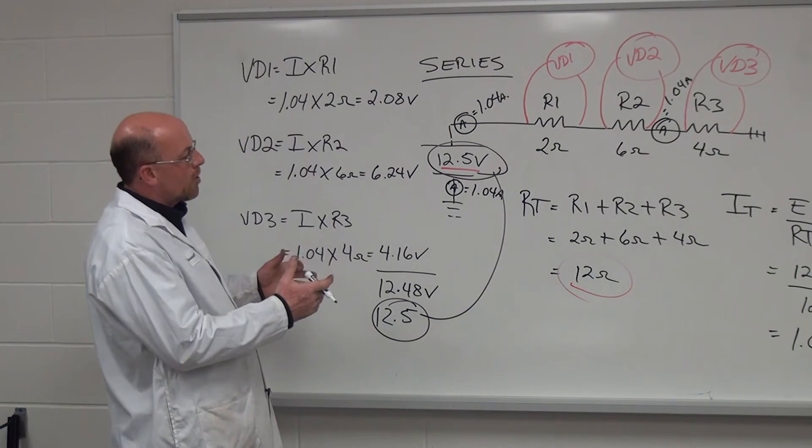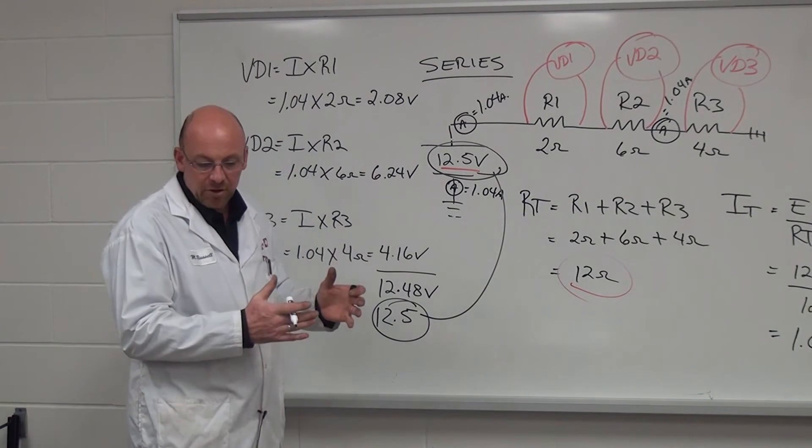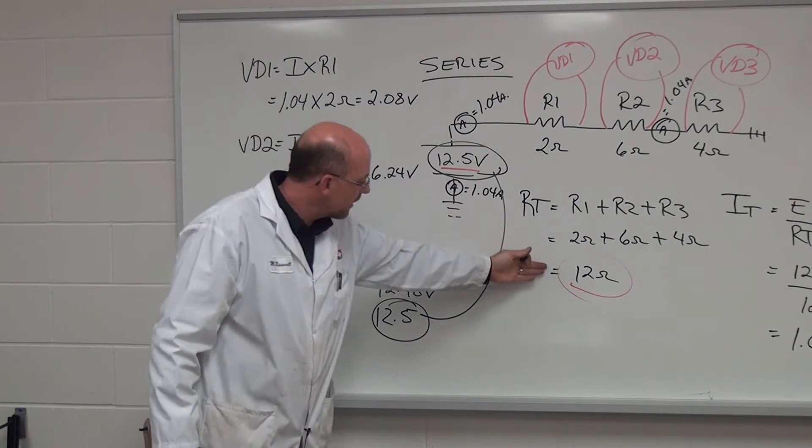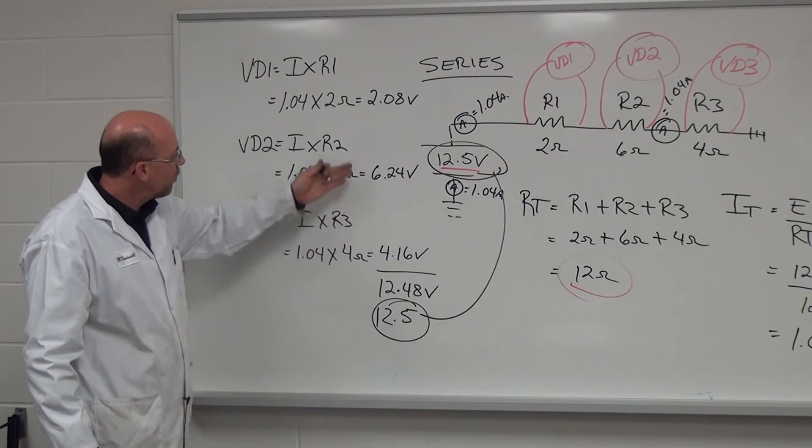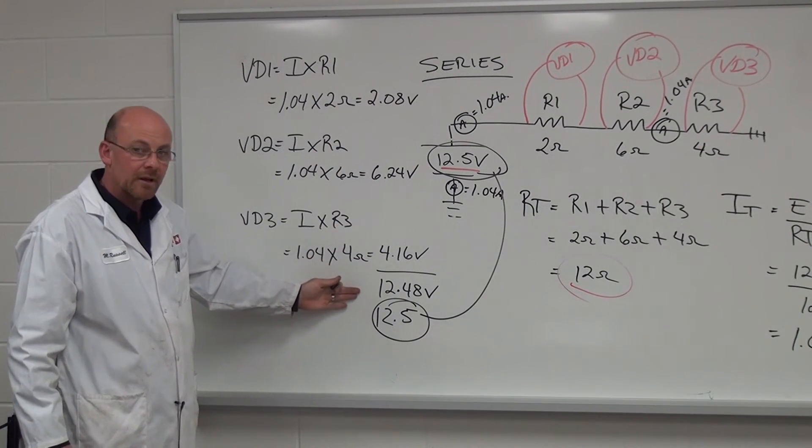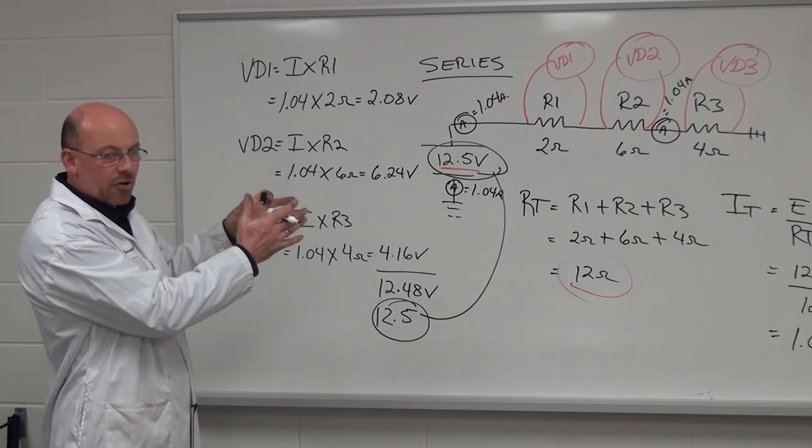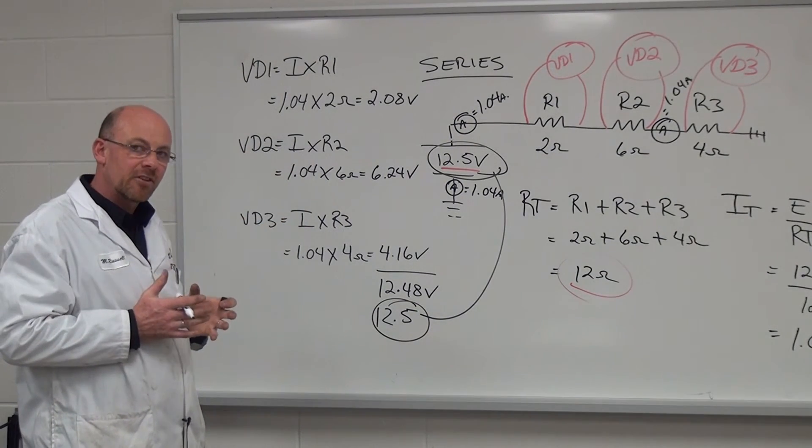So that's how we go about calculating out a series circuit and establishing what the current flow is, the total resistance in the circuit, as well as all the voltage drops that pertain to it. Now if we take a look at the understanding of doing a diagram like this and how it pertains to the industry.